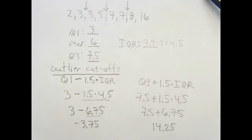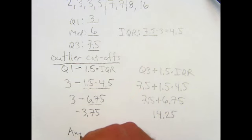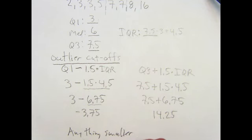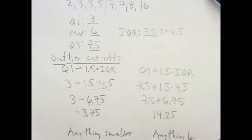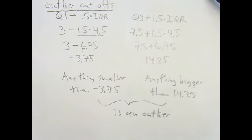All right, okay. So what that means, let's just write this out. What that means specifically: anything smaller than negative 3.75 or anything bigger than 14.25 is an outlier. Okay, I wrote that kind of weird. Anything smaller than negative 3.75 or anything bigger than 14.25 is an outlier. Is 16 an outlier? Sure.